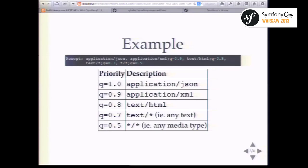The q parameters specify preference. Because application/json has no q parameter it defaults to 1, so a client sending this header is saying 'I want JSON ideally, but if you don't have that, my next preference is XML, and if not, I'll accept HTML.' You can look at your browser's default Accept header — browsers are lenient, willing to accept HTML, images, and at worst anything.